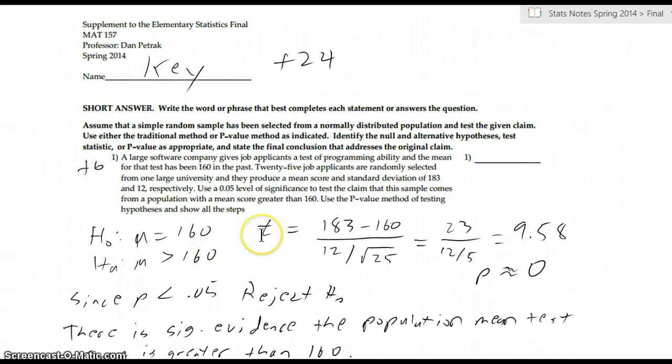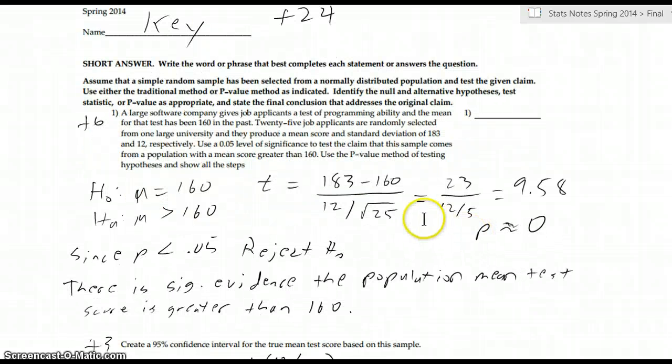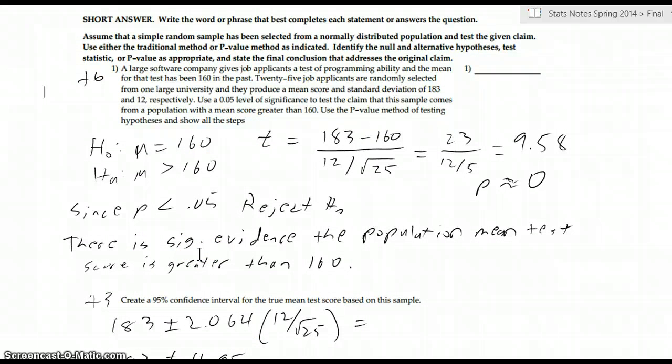And I'm using a T statistic here. You might be tempted to use a Z, and I think I actually counted it right if people did, because it does say it's from a normally distributed population. But it doesn't give us the population standard deviation. It only gives us a sample standard deviation. So that's why I would defer to T here, but I don't think I penalized people if they used Z. But I would encourage T here, and just in general, when we're working with means, it's just smarter to use T. And so we've got a sample of 25 people here. We find this T statistic is 9.58, very large. That P value would almost be zero. So that's like the chance of getting this much difference by random chance, really very small, which means we should reject the null. It's much less than 0.05. That means there's significant evidence the population mean of the test scores is greater than 160.